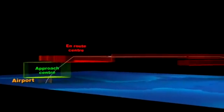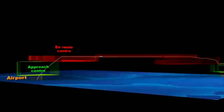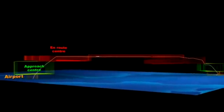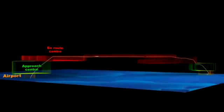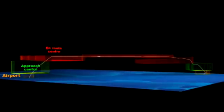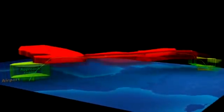Enroute controllers deal with aircraft at cruising altitude, approach controllers when the flight is in or outbound, and airport controllers for landing and take-off. The enroute centres can cover a wide geographical area.